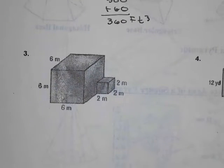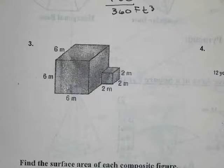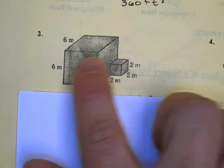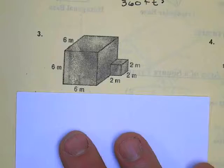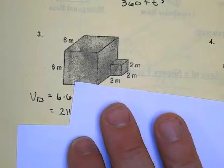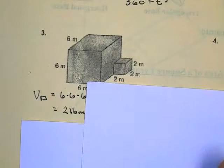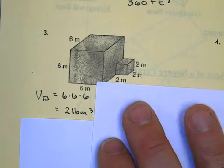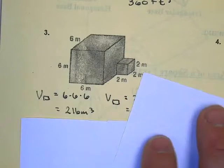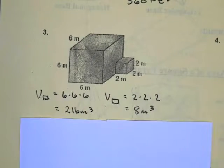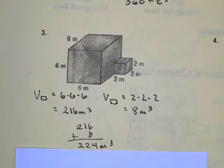Go ahead and pause the video to try number 3 on your own, then we'll compare results. For number 3, first find the volume of each individual box using base area times height. The base area is 6 times 6, times the height of 6, giving 216 meters cubed. Then for the second box: 2 times 2 for the base area, times 2 for the height, equals 8. Adding 216 plus 8 finishes that problem.